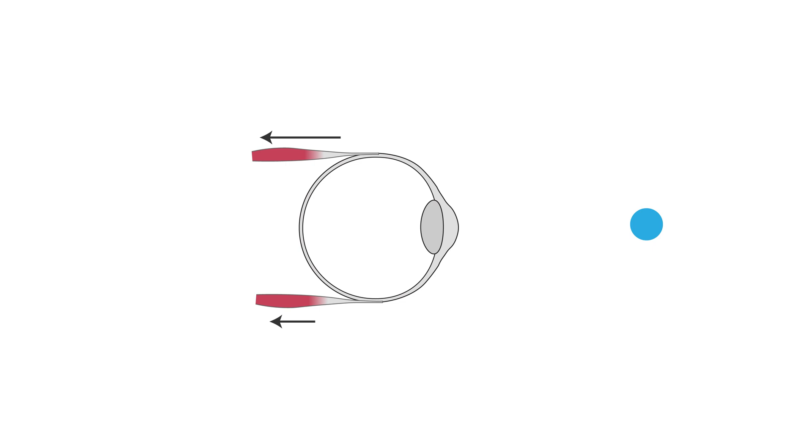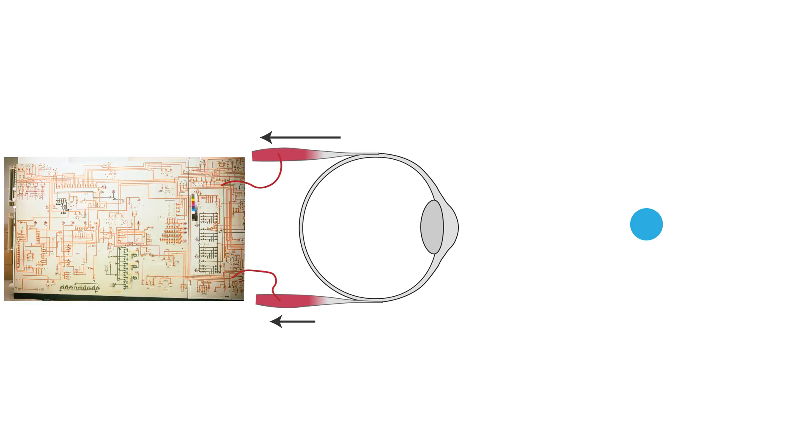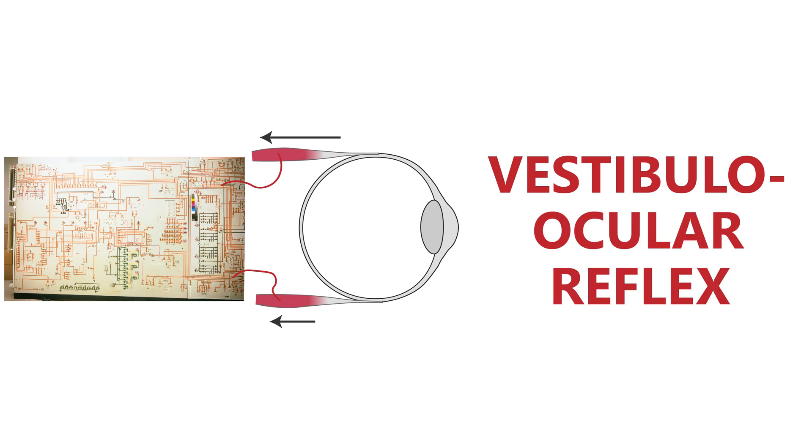To make that happen, your brain has to use a number of different circuits and reflexes. And today, we'll take a look at one of these, the vestibulo-ocular reflex, which ties your internal accelerometer to your eye muscles.